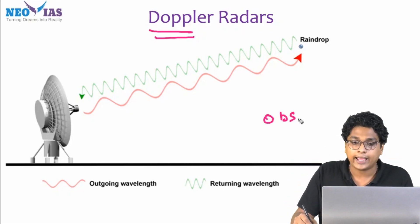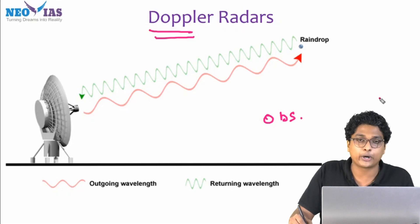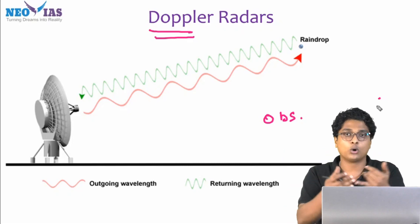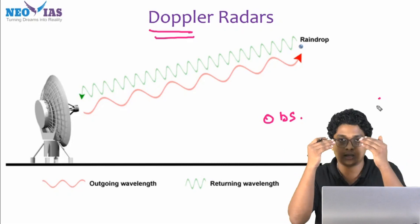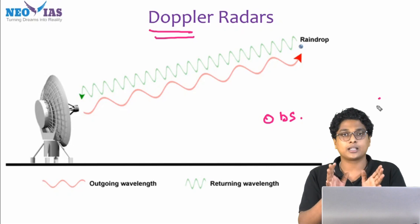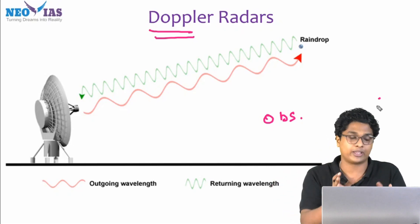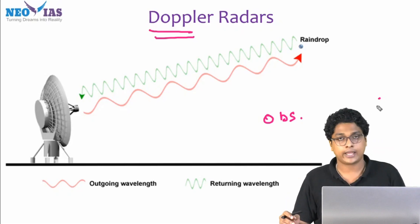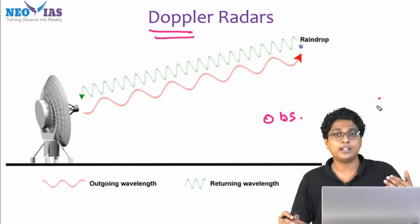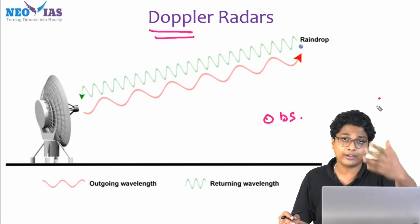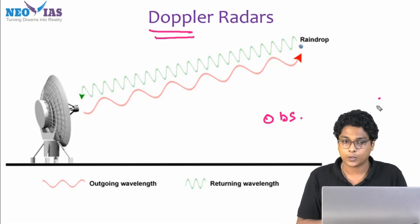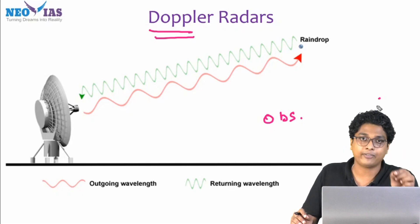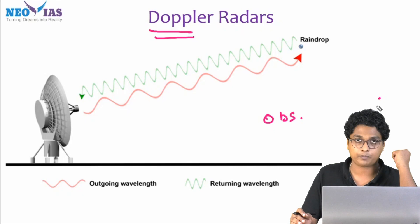A simple example would be an ambulance. An approaching ambulance sounds different, and then the ambulance moving away from us would sound differently. These Doppler radars use the Doppler effect to detect raindrops. As seen in the diagram, radio waves would be emitted — as they reach the raindrops, it would scatter this radiation, and some part of it would reach back to the observatory.